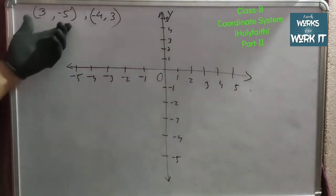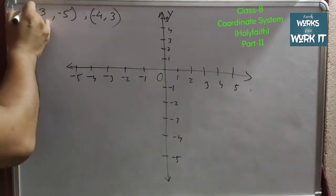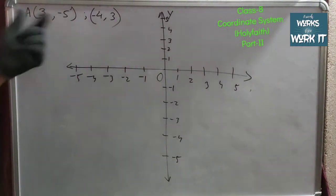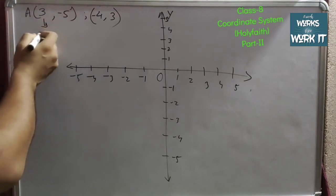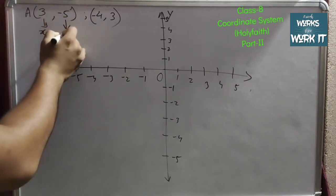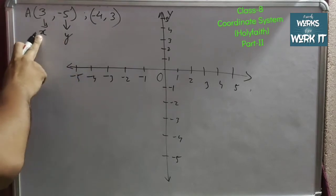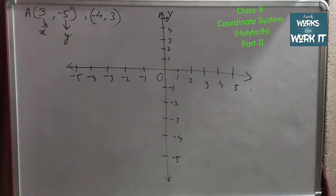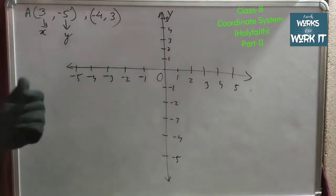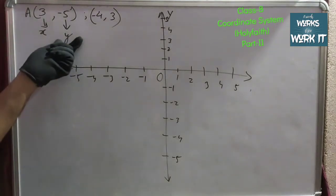What is the first point given here? If I take this one as A (3, -5). Already I have told you that this is for x-axis and this is for y-axis. So this first number is called the x-axis value and this second number is the y-axis value.